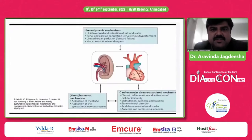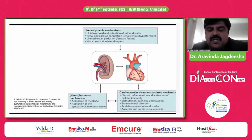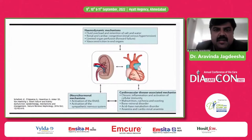The hemodynamic mechanisms include fluid overload, retention of salt and water, renal and cardiac congestion, limited organ perfusion, and vasoconstriction in end organs, leading to RAAS activation and sympathetic nervous system activation. This is associated with mechanisms like chronic inflammation and activation of cellular immunity, malnutrition, cachexia and wasting, bone mineral disorder, acid-base metabolism disorder, anemia, and cardiorenal anemia.